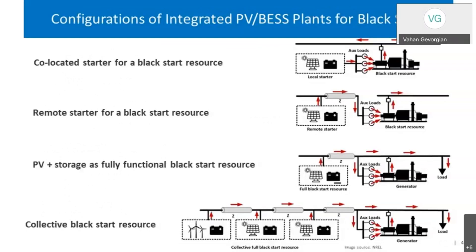One example of a black start application utilizing wind power is a project funded by the Wind Energy Technology Office that NREL is doing in collaboration with GE. It involves demonstration of a grid-forming wind turbine for different applications, including black start. We're still in the modeling stage, looking at how grid-forming wind turbines can be used to provide various services to the grid including resiliency services in the form of black start and islanded operation. In this particular scenario, we're looking at a wind power plant that has a combination of both grid-forming and conventional grid-following wind turbines, and looking at the stability aspects of that operation.